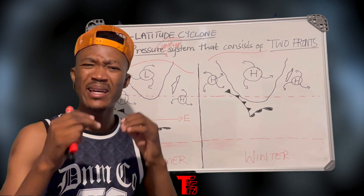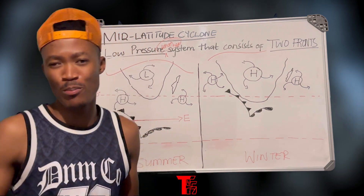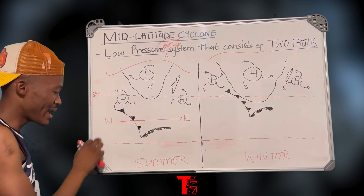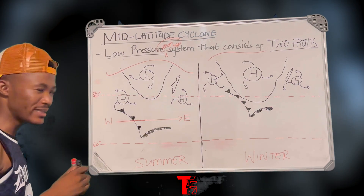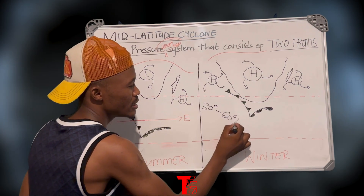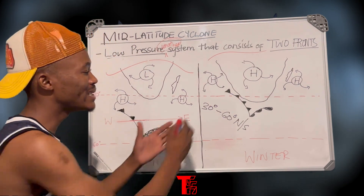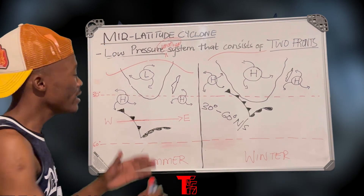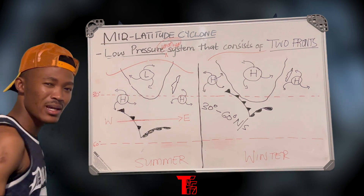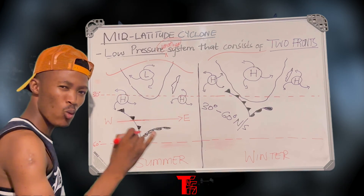To understand mid-latitude cyclones better, we need to understand the area of formation — where does this cyclone form and develop? Mid-latitude cyclones develop between 30 degrees and 60 degrees latitude in either hemisphere, whether it is the northern hemisphere or the southern hemisphere. Going back to global circulation from grade 11, you will recall the prevailing winds between 30 and 60 degrees latitude — the subtropical westerlies.